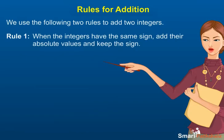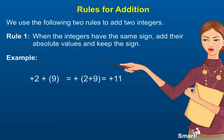Rule 1: When the integers have the same sign, add their absolute values and keep the sign. For example, the sum of plus 2 and plus 9 will be plus 11. The sum of minus 2 and minus 9 will be minus 11.